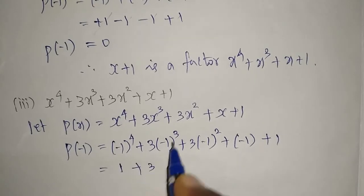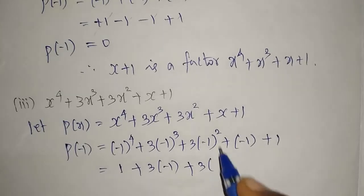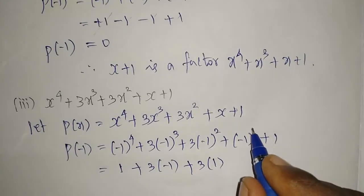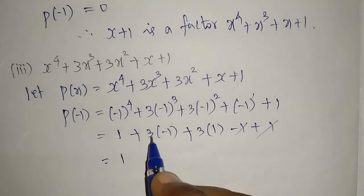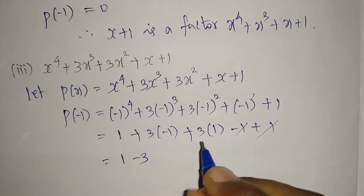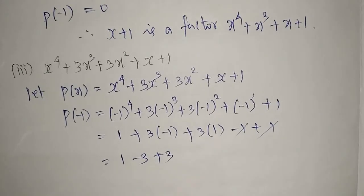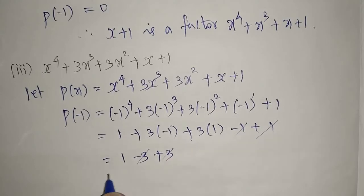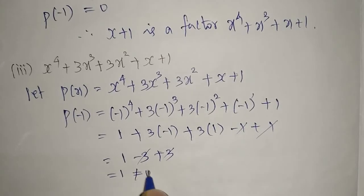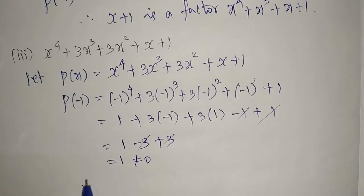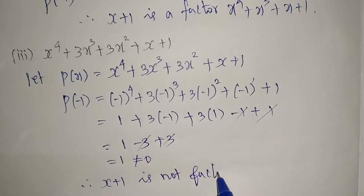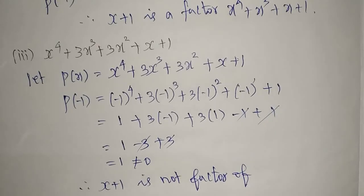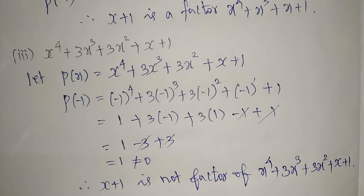(-1)³ has odd power so it's negative, and (-1)² has even power so it's positive. Then -1 + 1 cancels. Simplifying: 3 × (-1) = -3 and 3 × 1 = +3, so -3 + 3 cancels. We're left with 1, which is not equal to 0. Since p(-1) ≠ 0, therefore (x+1) is NOT a factor of the given polynomial x⁴ + 3x³ + 3x² + x + 1.